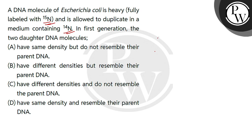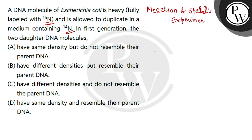So, the first generation of daughter DNA molecules — how do we find that? Basically, here we are talking about the Meselson and Stahl experiment. So, what do we have at the start? We have E. coli heavy N15 labeled DNA.